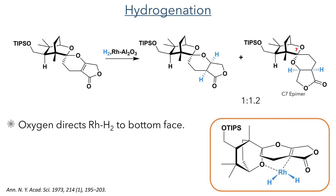With the tetracyclic framework now complete, the authors turned their attention to installing the correct functionality around the rings. This proceeded with the hydrogenation of the double bond in the lactone ring. This occurred from only one face of the molecule, due to the haptophilic oxygen in the ring structure which guided the metal catalyst to the bottom face. However, the authors did observe epimerisation during this reaction, which came from the cleavage and reforming of the spiroketal structure with an inversion of stereochemistry.